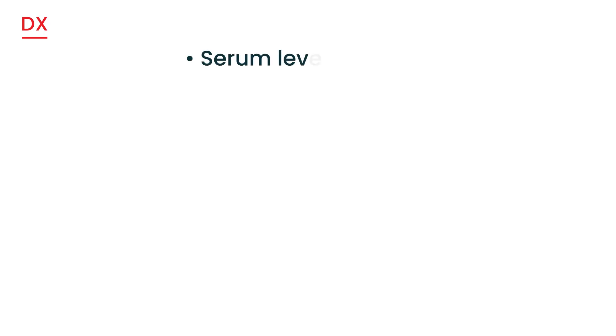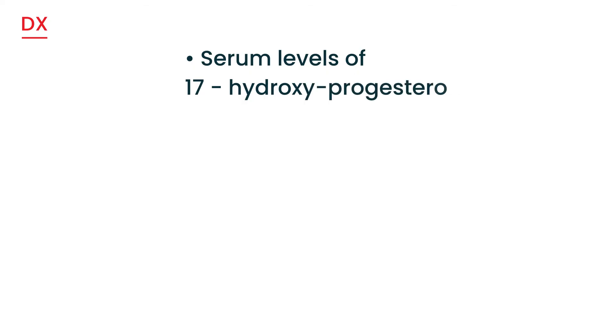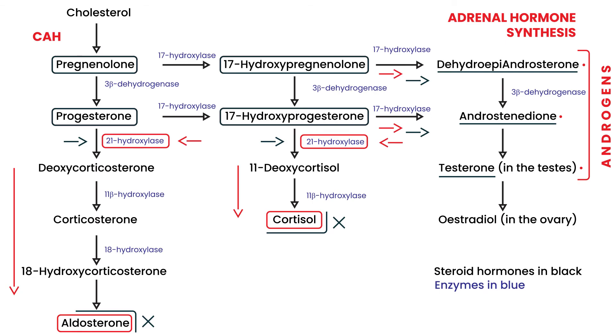For diagnosis, there are several things you can measure. First, you can measure serum levels of 17-hydroxyprogesterone, which will be elevated. Looking at the diagram, 17-hydroxyprogesterone is elevated because it cannot break down — 21-hydroxylase is deficient, so conversion cannot happen. That is a key component to the diagnosis.